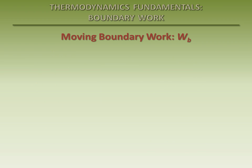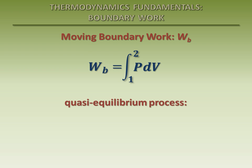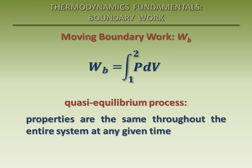It's important to note that the equation we derive for moving boundary work is for a quasi-equilibrium process. This means that the system remains nearly in equilibrium at all times — the process is sufficiently slow that the properties in one part of the system do not change any faster than those in other parts of the system. For example, the entire substance in the piston-cylinder device is at the same pressure at any given time. A quasi-equilibrium process is an idealized process, which can serve as a standard to which actual processes can be compared.